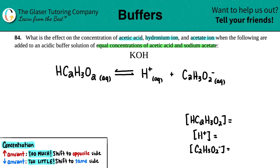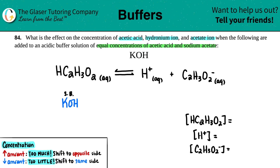The first thing I notice is that I'm adding potassium hydroxide. I do see that I have a metal here — potassium — so it's ionic and it's going to dissociate. KOH is one of your strong bases. Strong bases always dissociate 100% into their ions: potassium, which would be K⁺, and hydroxide, which is OH⁻.